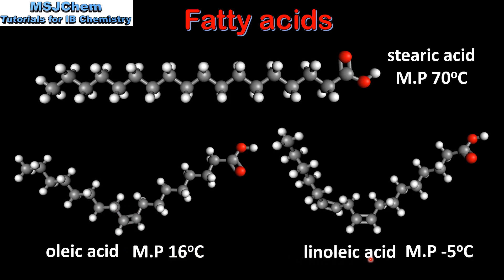Oleic acid's melting point is 16 degrees C. Bottom right we have linoleic acid, which is a polyunsaturated fatty acid with 2 carbon to carbon double bonds. Its melting point is negative 5 degrees C. By comparing the melting points of these 3 fatty acids, we can see that linoleic acid with the highest number of carbon to carbon double bonds has the lowest melting point, and stearic acid with no carbon to carbon double bonds has the highest melting point.